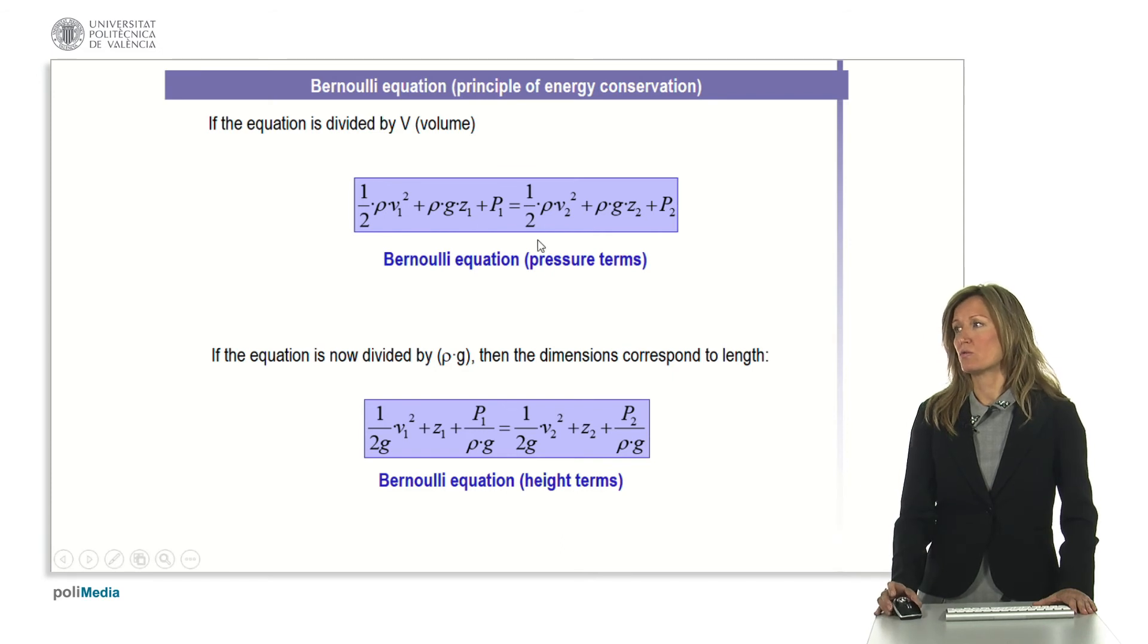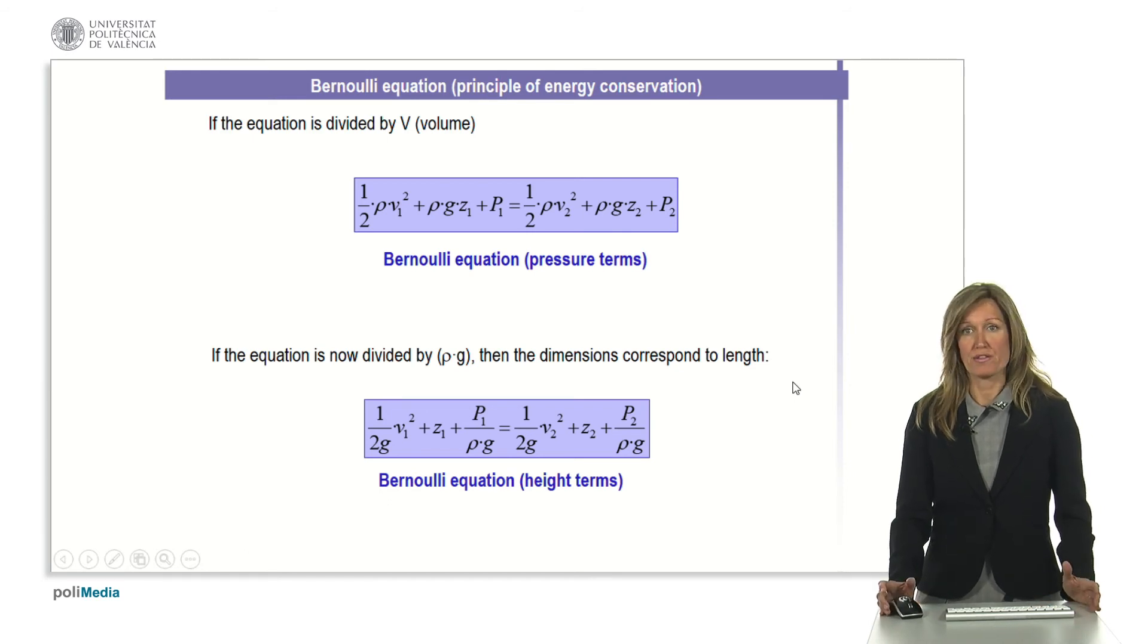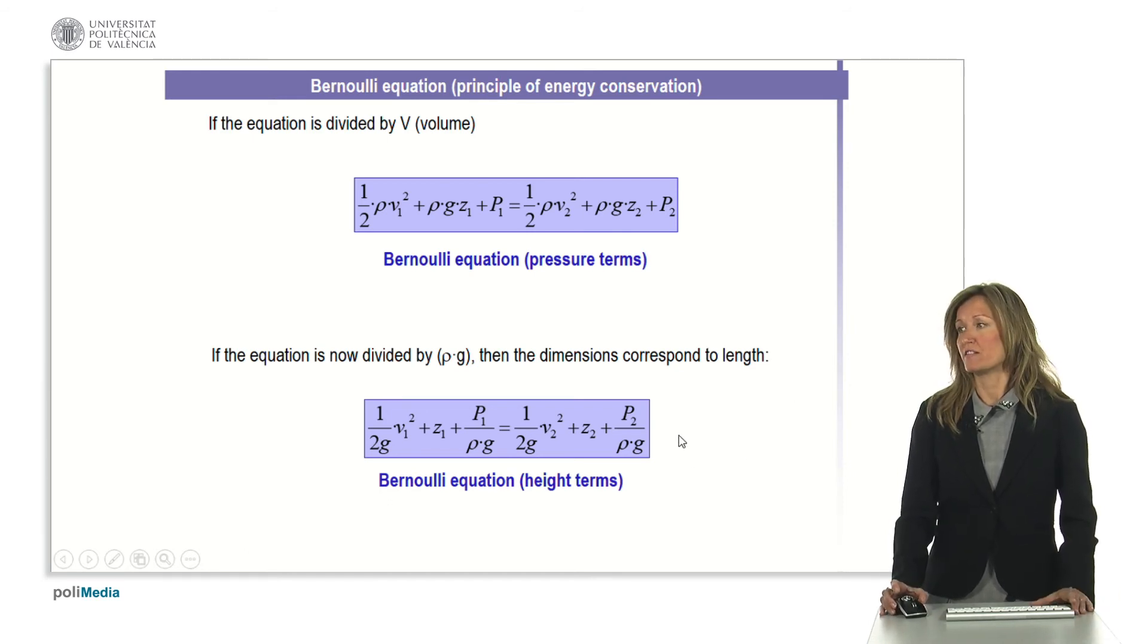And also, if this equation is divided by density gravity, then the dimensions change to length to meters, so this is the Bernoulli equation again but expressed in terms of height in meters.